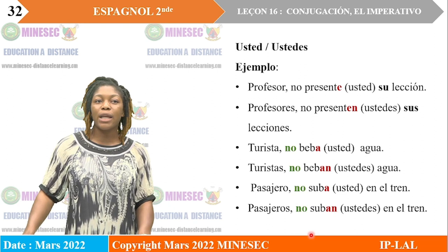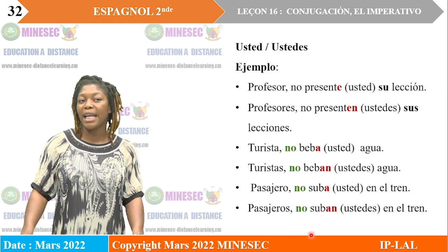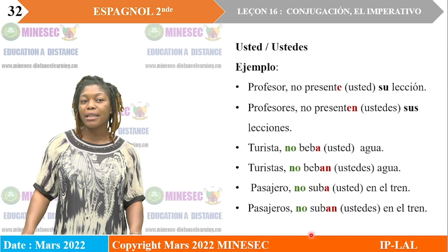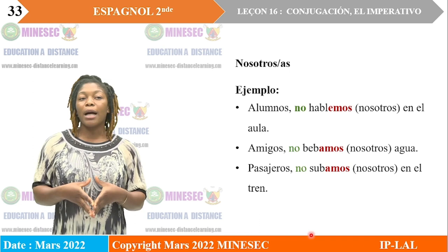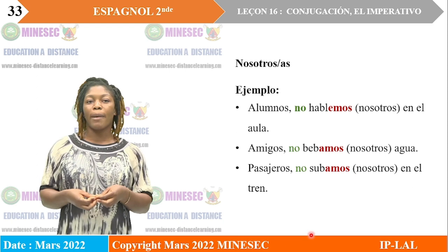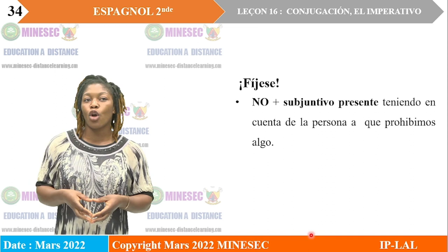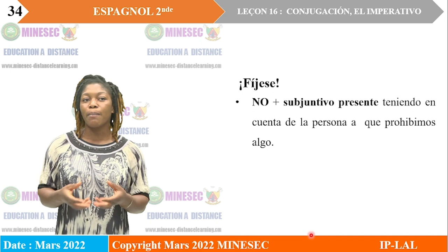Para usted y ustedes: profesor, no presente usted su lección. Profesores, no presenten ustedes sus lecciones. Turista, no beba agua. Turistas, no beban agua. Pasajeros, no suban en el tren. Para nosotros o nosotras: alumnos, no hablemos en el aula. Amigos, no bebamos agua. Pasajeros, no subamos en el tren. Hay que fijarse sobre la formación del imperativo negativo, que es no más subjuntivo presente, teniendo en cuenta la persona a que prohibimos algo.